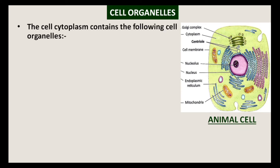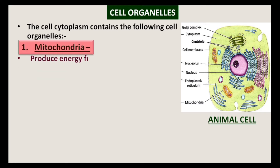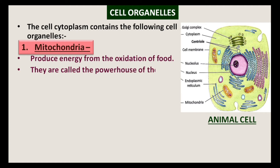First is mitochondria. Mitochondria produce energy from the oxidation of food. Oxidation means addition of oxygen to a substance. Mitochondria are called the powerhouse of the cell. The yellow colored oval shaped structure is mitochondria in the figure.